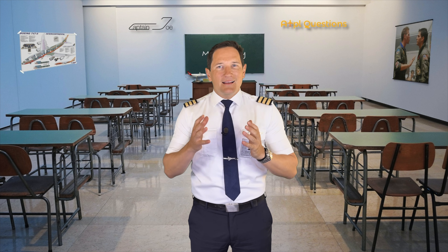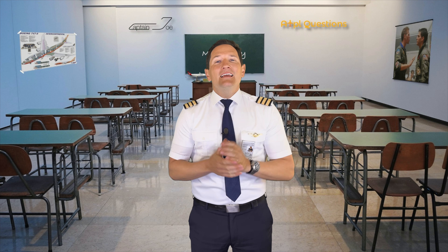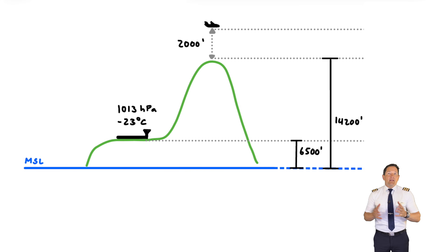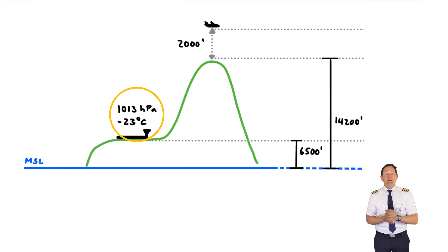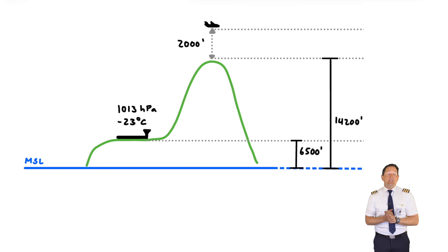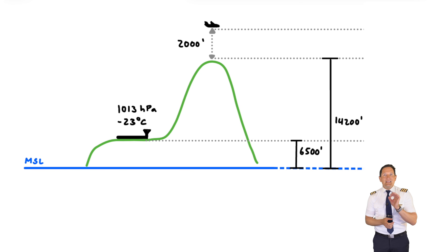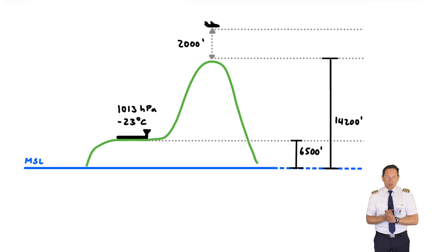Let's dive into meteorology with the first question, already being a classic when it comes to calculations in MET. Like many times before, it is best if you draw up a little sketch. The aircraft is flying over a mountain with an elevation of 14,200 feet and we're expected to clear this terrain by 2,000 feet. A nearby airport with an elevation of 6,500 feet is reporting a QNH of 1013 hPa and an outside air temperature of minus 23 degrees Celsius. The question wants us to find the indicated altitude — the figure on your altimeter — in order to clear this terrain by 2,000 feet.